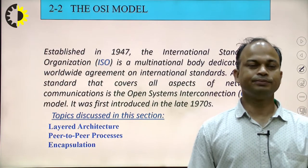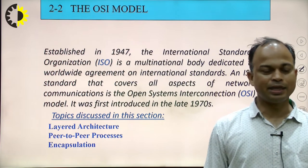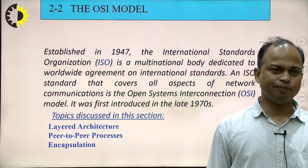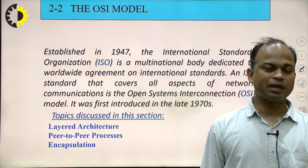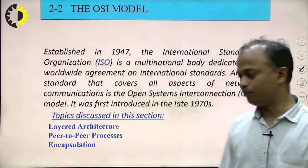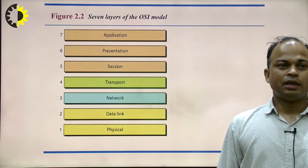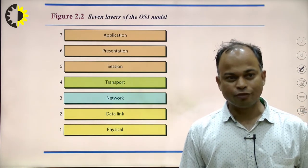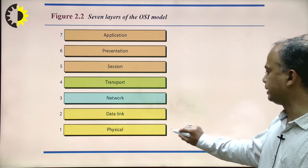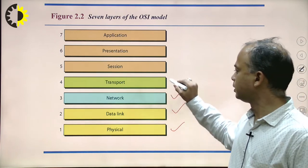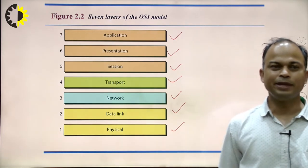The first model we are going to discuss is the OSI reference model. It is based on the concept of layered architecture. Whenever data is coming from upper layer to lower layer, we follow a process called encapsulation. When we talk about the OSI reference model, we have seven layers: physical layer, data link layer, network layer, transport layer, session layer, presentation layer, and application layer — a total of seven layers.